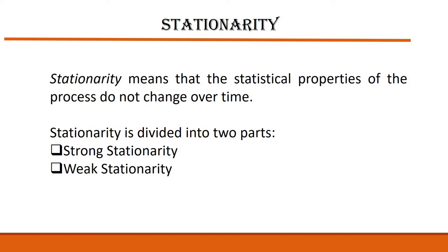Stationarity in time series implies that if you take consecutive sample data of the same size, it should have identical covariance regardless of the starting point. That means when you take data at two different points — say from 2000 to 2020 — whether you look at the data at 2000, 2005, or 2008, it should have a constant covariance. That is the meaning of stationarity in time series.